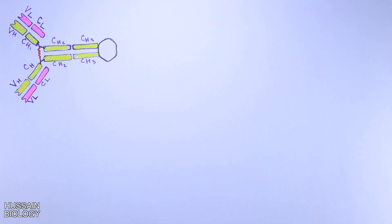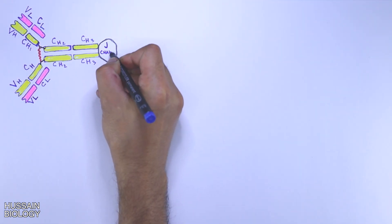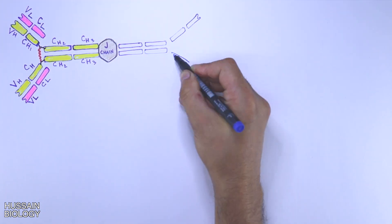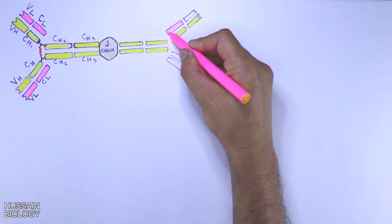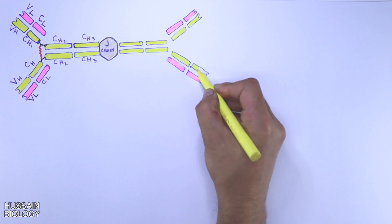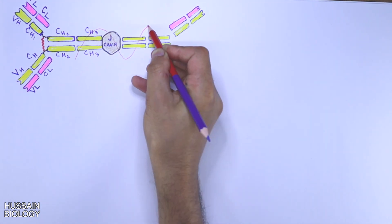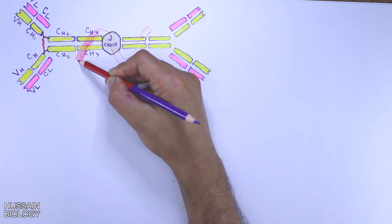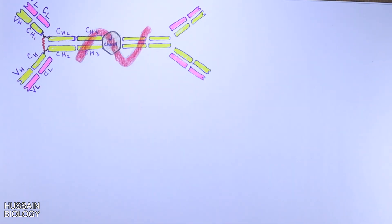Furthermore, if we see how we get the dimer form of IgA, we see two monomers are linked via J chain as shown in the diagram to form the dimer form of IgA. We also have the secretory component that wraps around two monomers of IgA as shown in the diagram. It wraps around two tail ends of IgA monomers.